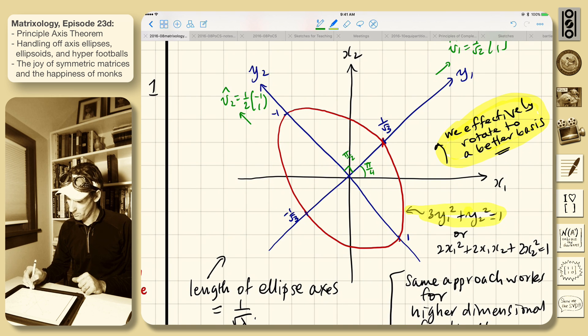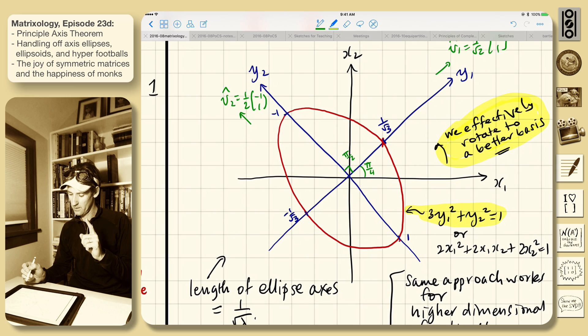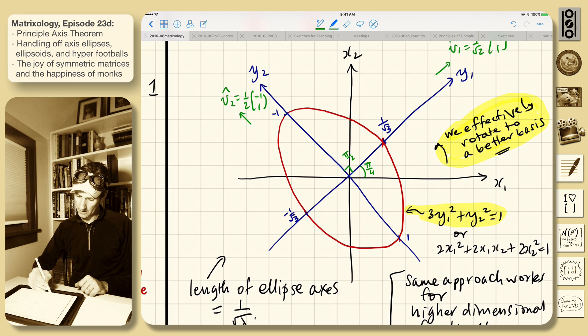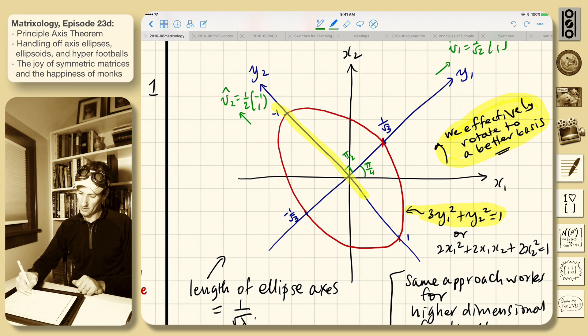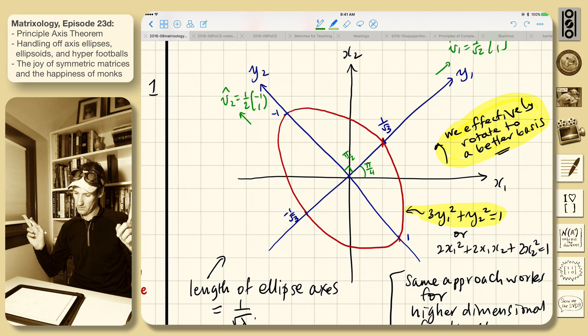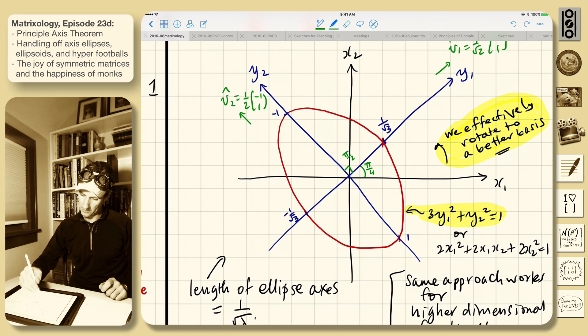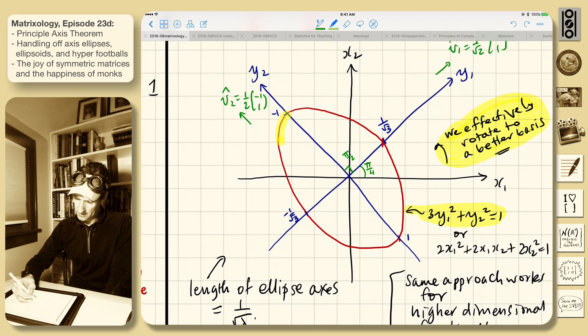And this equation is very simple here. So 3y1 squared plus y2 squared equals 1. So when y2 is 0, along this line, then y1 is 1 over the square root of 3, plus or minus 1 over the square root of 3. When y1 is 0, this line, then we have the major axes and semi-major axes, which is the minus 1, 1. Okay. And then it's the ellipse. Right? Whoop. Whoop. Beautiful.